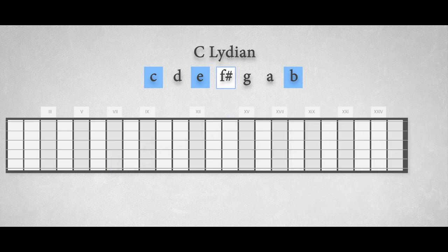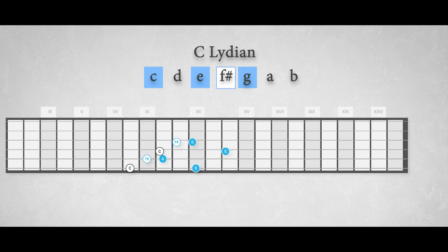You can also play the Lydian arpeggio with a more advanced fingering, by adding the raised fourth degree to the major triad like this, C, E, F sharp, G. And repeat this over the next octaves.